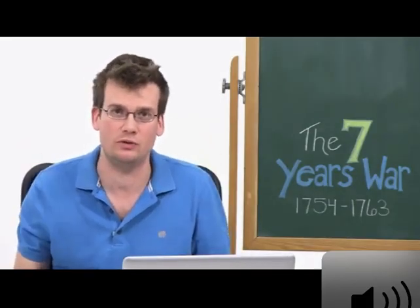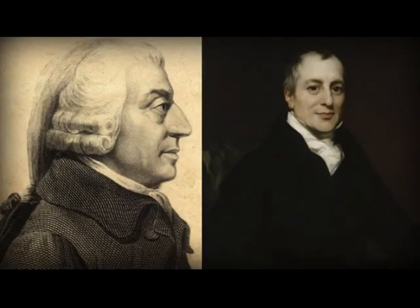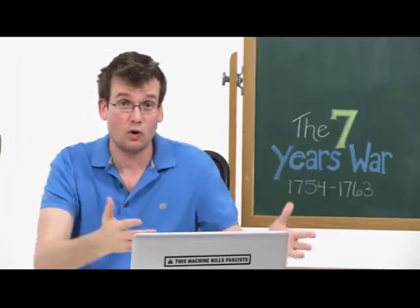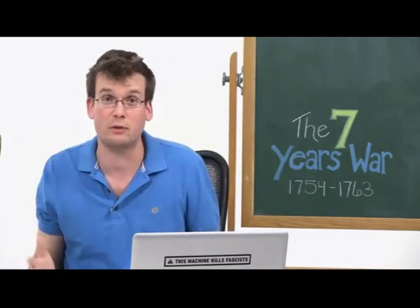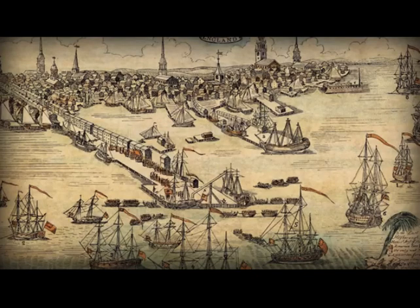Mercantilism was the key economic theory of the British Empire in the 18th century. While Adam Smith and David Ricardo were talking up free trade and economic liberalism by 1750, no one was really listening. Mercantilism was basically the idea that the government should regulate the economy in order to increase national power, by encouraging local production through tariffs and monopolies and ensuring a favorable balance of trade. Colonies were an awesome way to create this favorable trade balance because they both produced raw materials and bought back finished goods made from those raw materials.